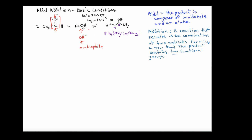Now there are a couple of things I want to say about these addition reactions. An addition reaction involves the reaction between two molecules where a new bond is formed between them. One of the key features of the aldol addition is that you're generating a new carbon-carbon bond. The outcome is called an aldol because you're producing a molecule with two functional groups: an aldehyde functional group and an alcohol group. The product is called a beta-hydroxy carbonyl molecule because it has a hydroxyl group at the beta position.